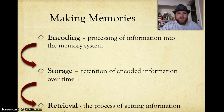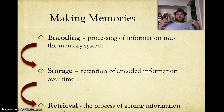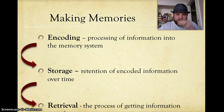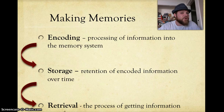But after we store these memories, they're not just going to sit there. We need to retrieve them. Retrieval is the process of getting information out of memory storage. So we encode the information as it comes to us, store it away in our memory banks, and then we're able to retrieve it — much like a computer does. But our brain is a bit more complicated than a computer.